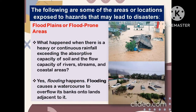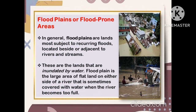The following are some of the areas or locations exposed to hazards that may lead to disasters. First: floodplains or flood-prone areas. What happens when there is heavy or continuous rainfall exceeding the absorptive capacity of soil and the flow capacity of rivers, streams, and coastal areas? Flooding happens. Flooding causes a watercourse to overflow its banks into lands adjacent to it. In general, floodplains are lands most subject to recurring floods, located beside or adjacent to rivers and streams — lands that are inundated by water. A floodplain is a large area of flat land on either side of a river that is sometimes covered with water when the river becomes too full.